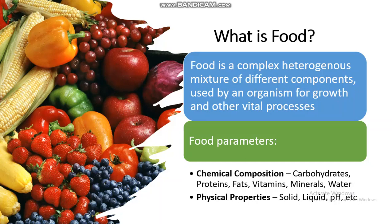Food is a complex heterogeneous mixture of different components used by an organism for growth and other vital processes. The different food parameters include chemical composition — the food contains carbohydrates, proteins, fats, vitamins, minerals, or other substances — and physical parameters like whether the food is solid, liquid, etc.